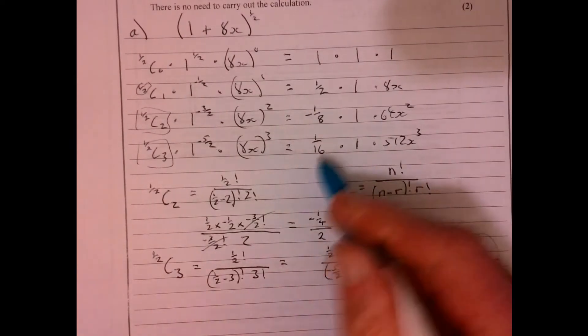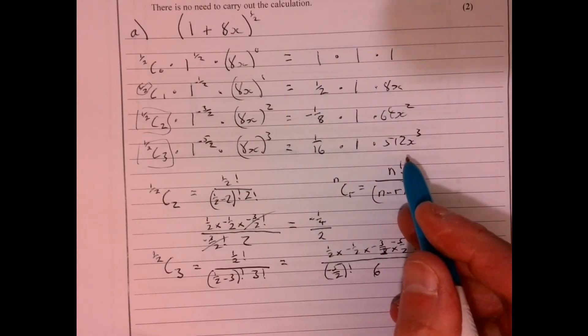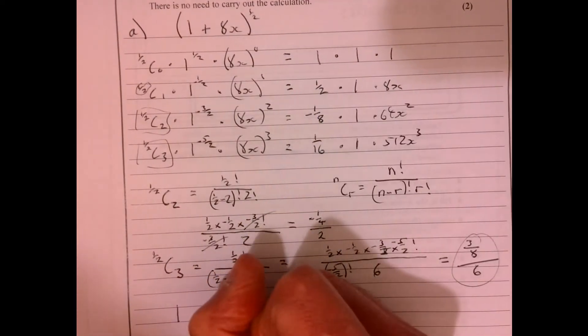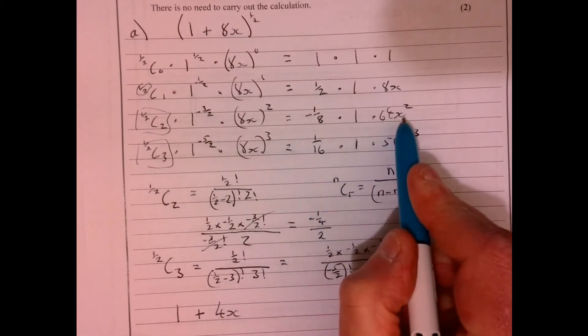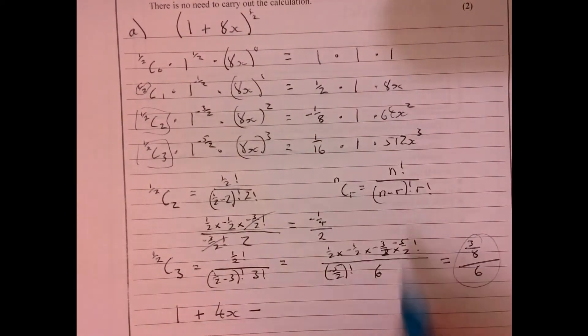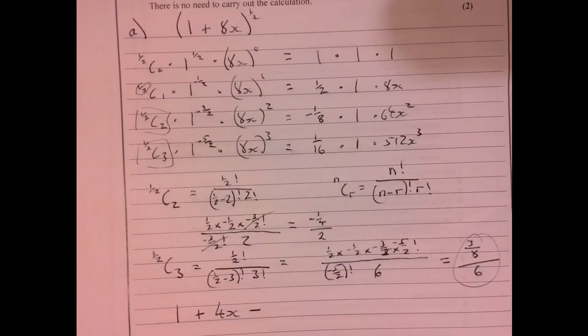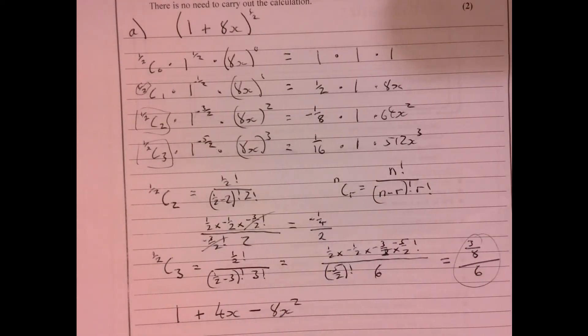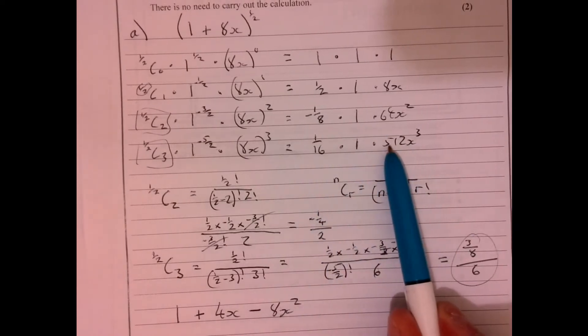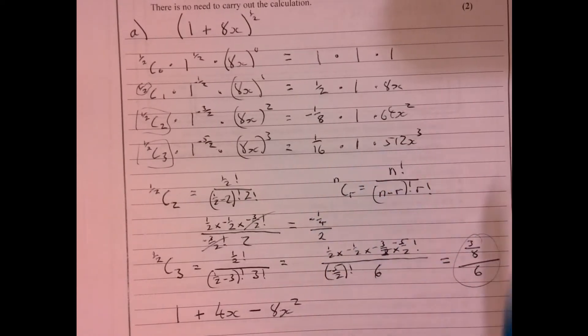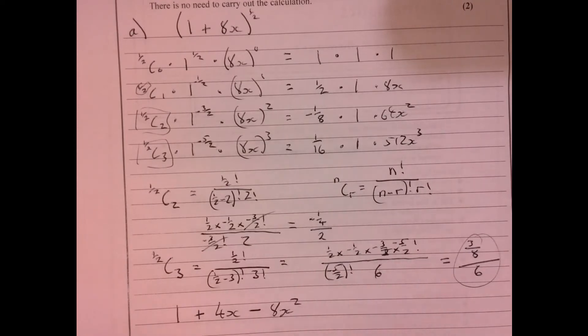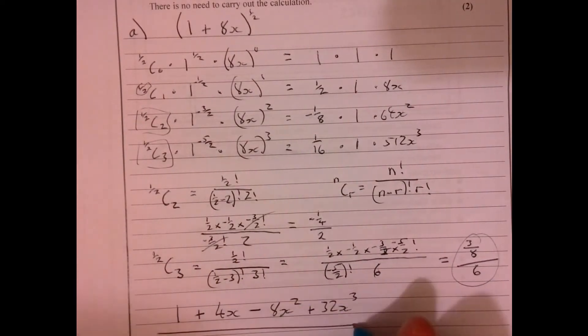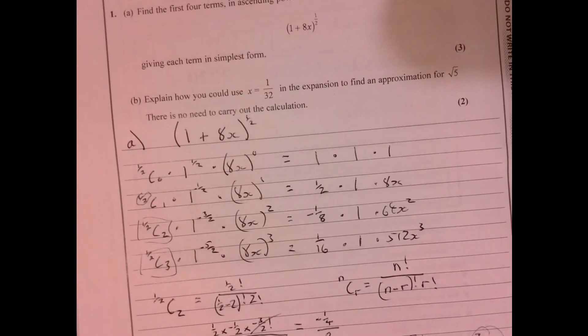So now we can actually work out the answer. So we've got 1, and then we've got plus 4x, and then we've got minus, negative there, and then 1 eighth of 64, which is 8x squared, and then we've got 1 16th of 512, which is 32. Now, last bit of the question. Part B.